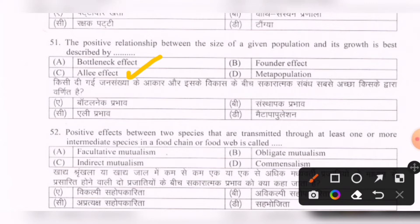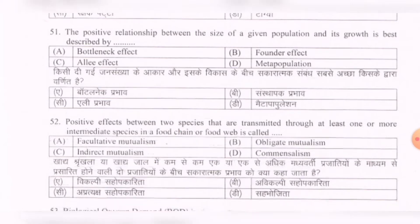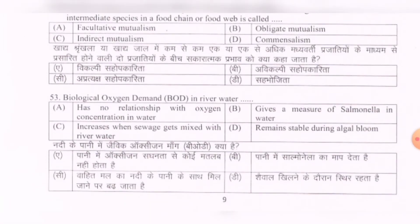Next question: Positive effects between two species that are transmitted through at least one or more intermediate species in a food chain or food web is called — options are: facultative mutualism, obligate mutualism, indirect mutualism, commensalism. The correct option is C, that is indirect mutualism.